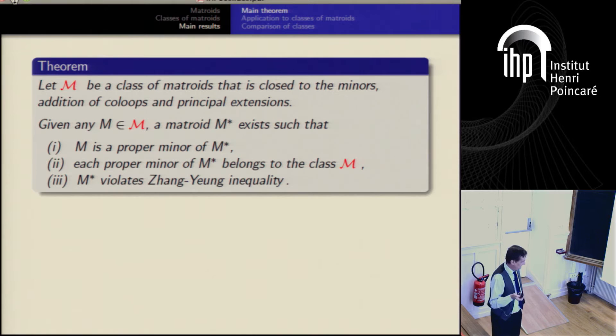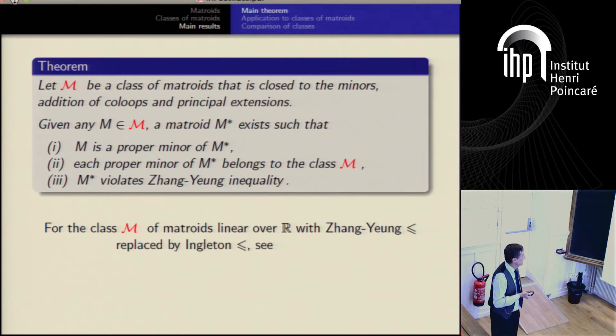I was happy to meet them in Banff a couple of years ago. We were there. Dillon Mayhew had a lecture on excluded minors for real representativity. And they had basically the same theorem for matroids linear over real numbers with Ingleton inequality. If you substitute Ingleton here, that was their theorem. It was originally conjectured by Jim Gillen. And this is stronger because if I assume weaker inequality, then this is a bit stronger. And this is the first time when I saw in the matroid theory Zhang Yang inequality.